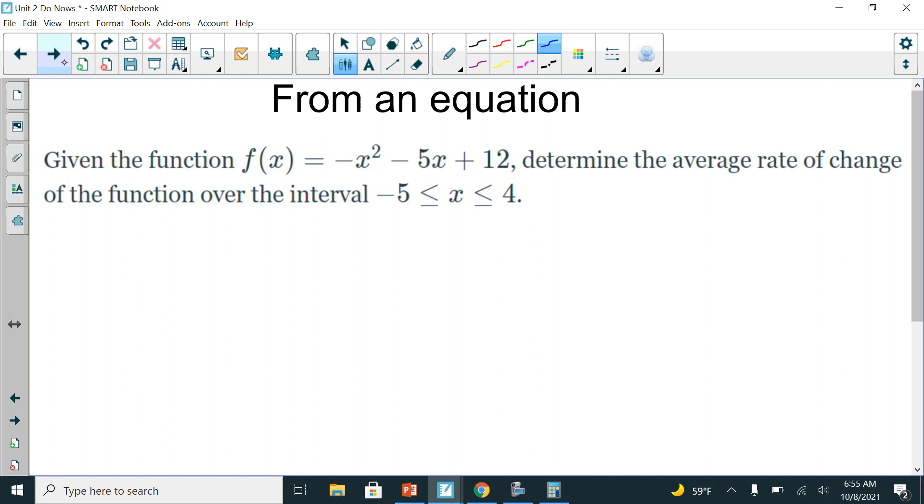So here they want us to, here's our equation, and they're giving us, here's our x1, here's our x2. So they're telling us that we're going from negative 5 to 4. To find out what the y's are, you're going to take the negative 5, you're going to plug it in. So if I'm going to do f of negative 5, I'm going to plug it into my equation, which is negative, negative 5 squared minus 5 times my x is negative 5, and then I have to add 12 to it.